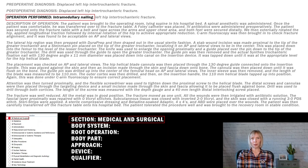Let's start building our code. First, we need to determine which section we will be working in. The section is the broad procedure category where the code is found. In this case, we are coding a surgical procedure, so we will select the medical and surgical section.